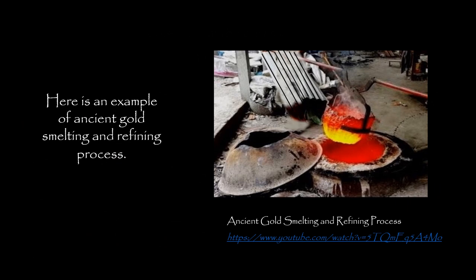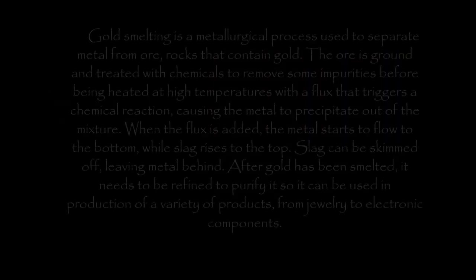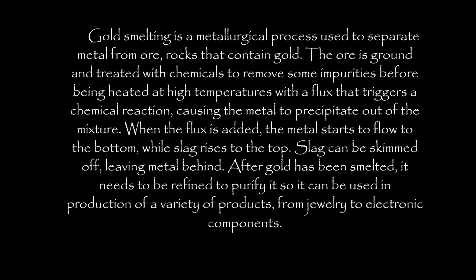Here is an example of an ancient gold smelting and refining process — you can find it on YouTube. Gold smelting is a metallurgical process used to separate metal from ore, rocks that contain gold. The ore is ground and treated with chemicals to remove some impurities before being heated at high temperatures with a flux that triggers a chemical reaction causing the metal to precipitate out of the mixture. When the flux is added, the metal starts to flow to the bottom while slag rises to the top. Slag can be skimmed off, leaving metal behind.